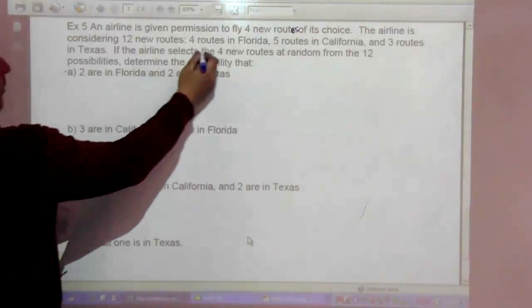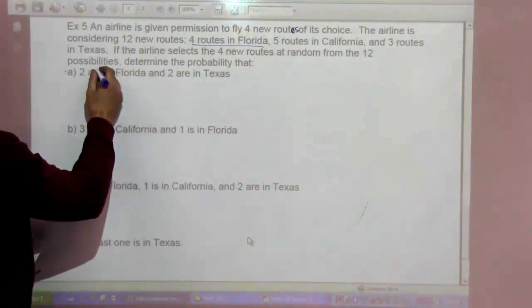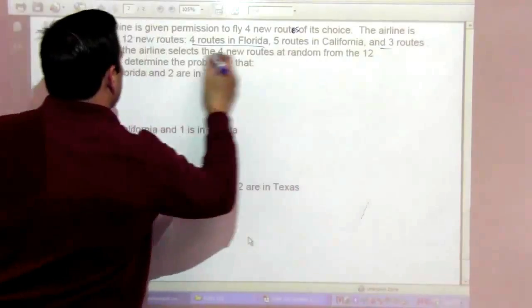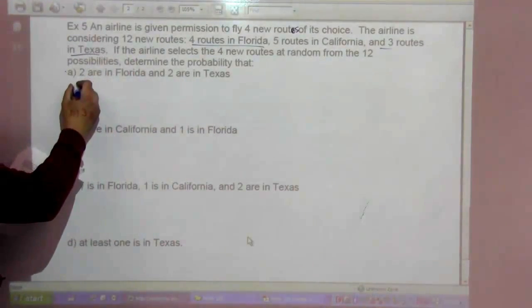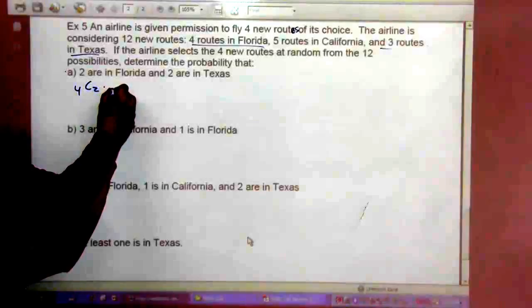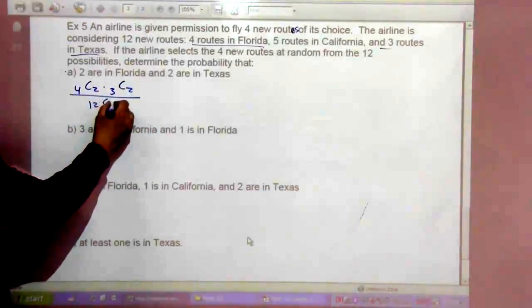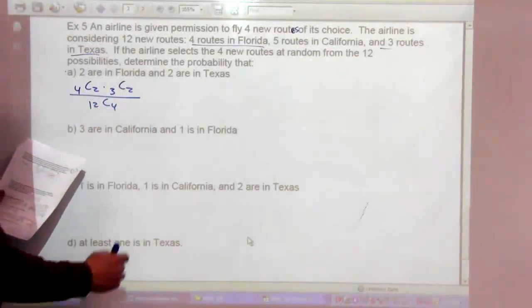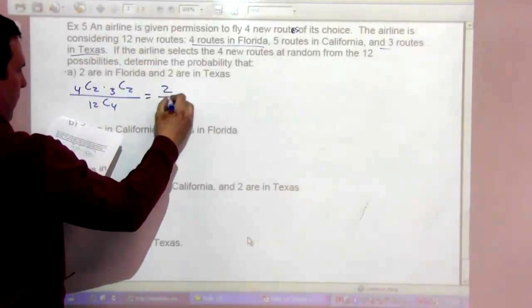So that would be Florida had 4, Texas had 3. That would be 4 choose 2 times 3 choose 2 over 12 choose 4. That's 2 over 55.